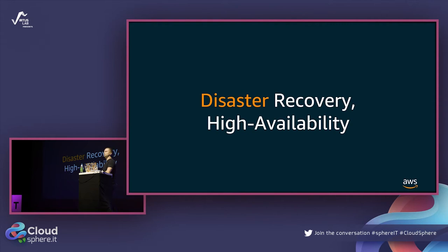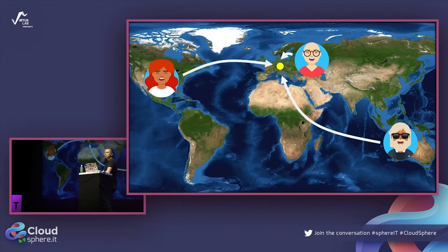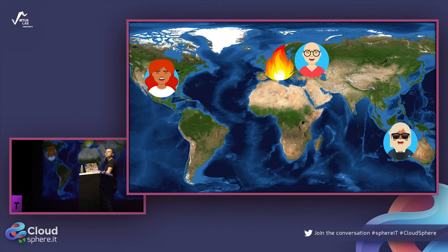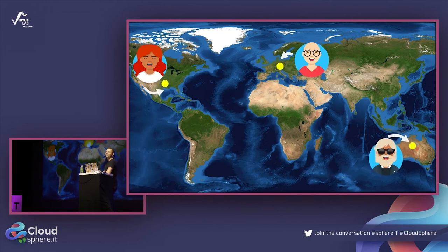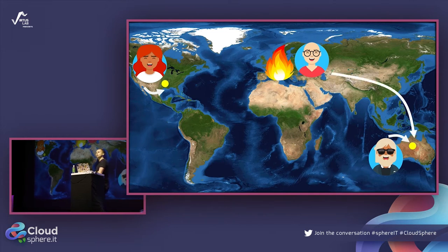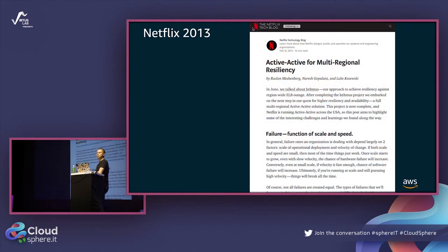The second reason is disaster recovery and high availability. If we are in one location and that location has a problem - a data center outage - none of the users can access the application. But if our application is hosted in all those locations, even if one data center has a problem, we can redirect users to a different location where our application is also hosted.